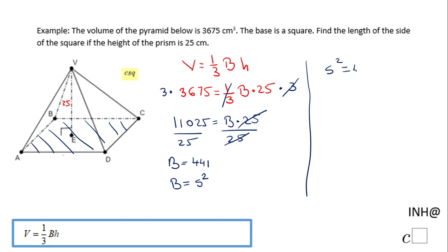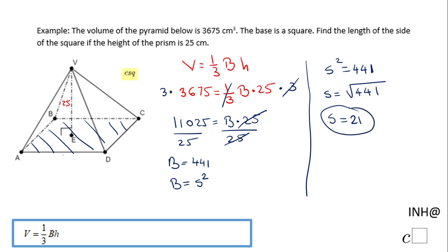Now we go back and replace B: s squared equals 441. We do one more step to find s, which is taking the square root. The square root of 441 is 21, so the side of this square is 21. If you enjoyed this video, don't forget to click the like button and come back to C Square for more help. Thank you.